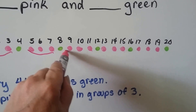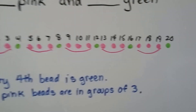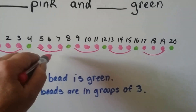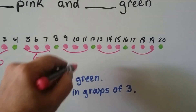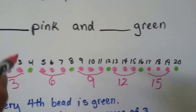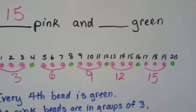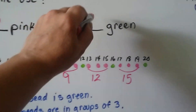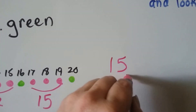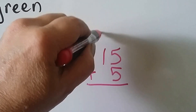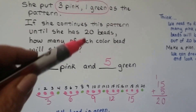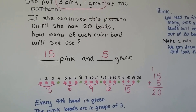We have groups of 3 pink beads. We can keep adding 3s to find out how many pink ones there are: 3, 6, 9, 12, 15. So we know there are 15 pink beads. The green ones — there are 1, 2, 3, 4, 5 green beads. Is 15 plus 5 equal to 20? We can add 15 plus 5: 5 plus 5 is 10, regroup the 1, put the 0 down, add the tens place and get 2. Yes — 15 plus 5 is 20. That's how many beads we were supposed to have, and we know she used 15 pink and 5 green.